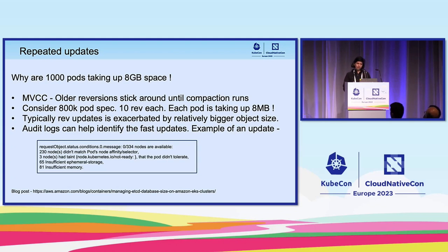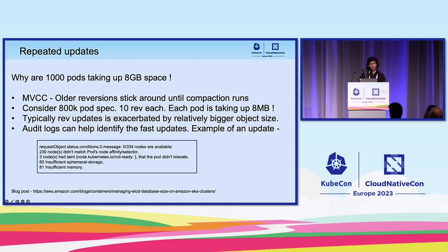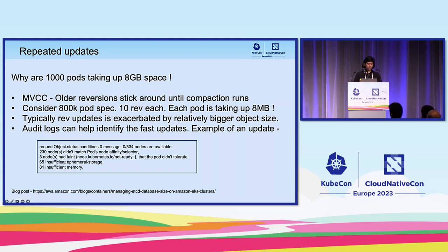The third factor is repeated fast updates. We often get questions like: 'I have just 1,000 pods — how are they taking up 8 GB?' Because when quota is hit, there are multiple revisions per key. If something goes through fast updates, it takes up much more than the object size. Consider an 800K pod spec that goes through 10 updates — it's now taking up 8 MB per pod. So 1,000 of those will consume the full 8 GB. Typically we see this together with large object size. An example from production shows the scheduler updating a pod repeatedly just to record that it cannot be scheduled on any node — unintentional side effects that eat up quota.